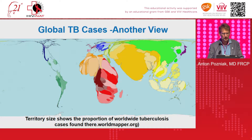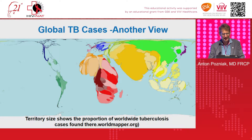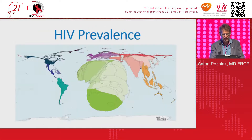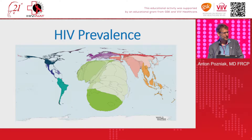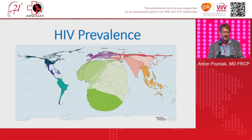Why is this important? If you look at a global map of TB cases, you can see that Africa, India, and Southeast Asia have large concentrations. And when you look at where HIV is, you see the same areas of the world. Wherever you see tuberculosis, you see HIV and vice versa.